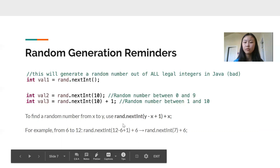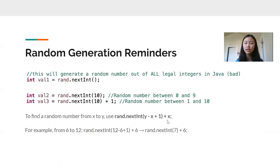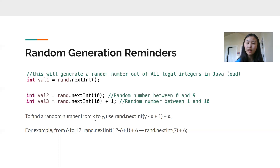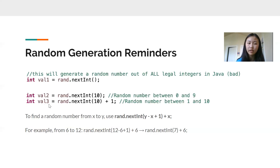The basic formula we can use when things get more complicated is: rand.nextInt(y - x + 1) + x. X is our lower bound and y is our upper bound. For example, if we wanted to generate from one to 10, x is one and y is 10. We plug in: rand.nextInt(10 - 1 + 1) + 1, which simplifies to rand.nextInt(10) + 1. That is exactly what we have written for val three — that's how we would generate between the bounds of one and 10.